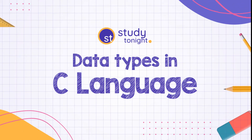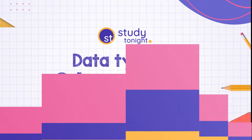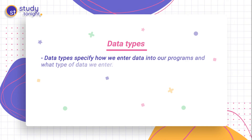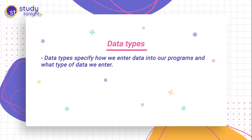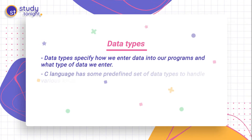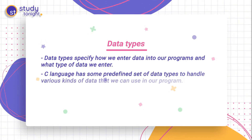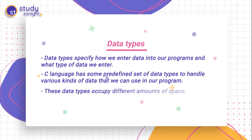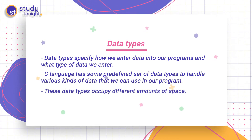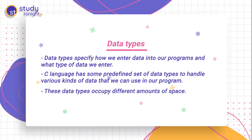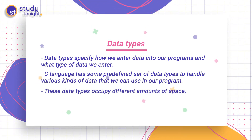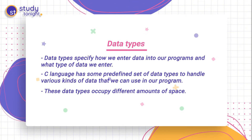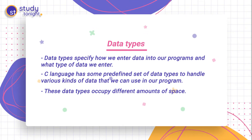So what are data types? Data types specify how we enter data into our program and what type of data we are entering. C language has some predefined set of data types to handle various kinds of data that we use in our program. These data types have different storage capacities.